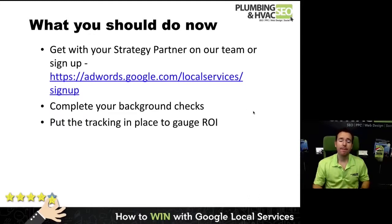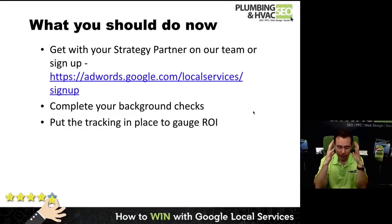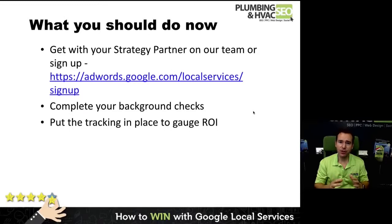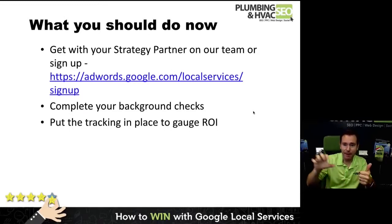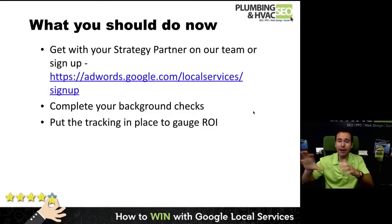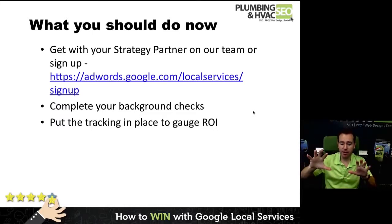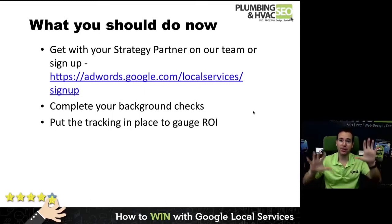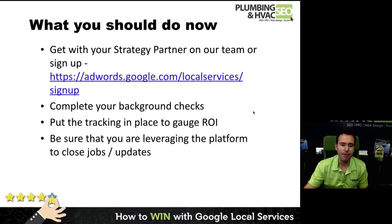Complete the background checks and put tracking in place. Don't go into this in a vacuum and just assume you'll get great ROI because the leads are cheap. Like anything else, make sure you're tracking how much you spend, how many leads you generate, how much revenue was there, and confirm there's positive ROI. It starts out good sometimes and then begins to diminish, so just make sure you've got the tracking in place.